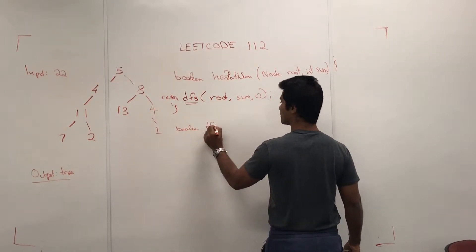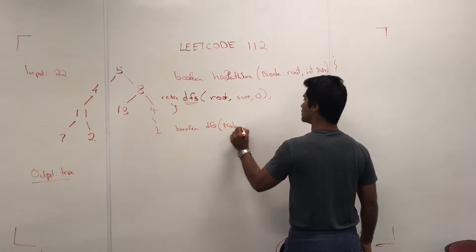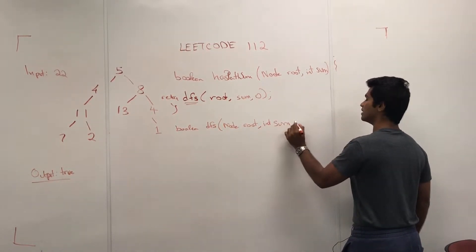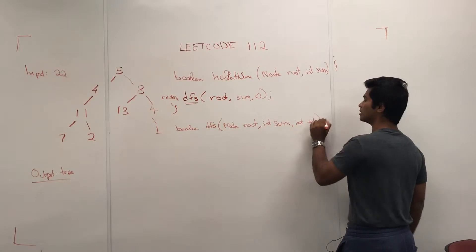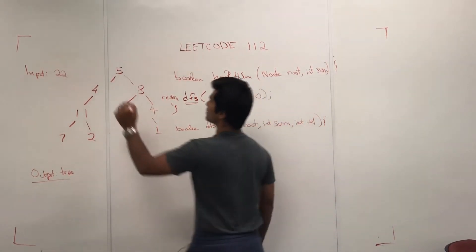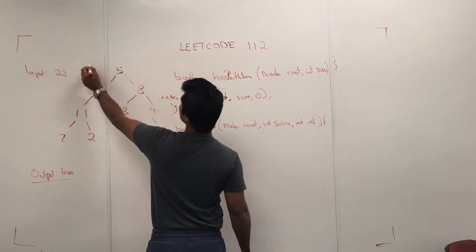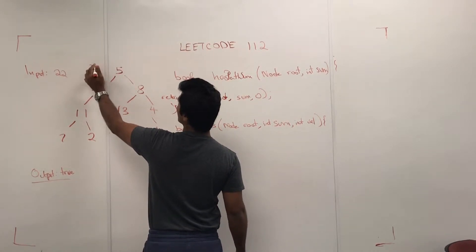The parameters are node root, int of sum, and int of value. So when we call DFS for the first time, we're calling it on 22. When we call it on 5, we're going to pass 22 and 0 to it.